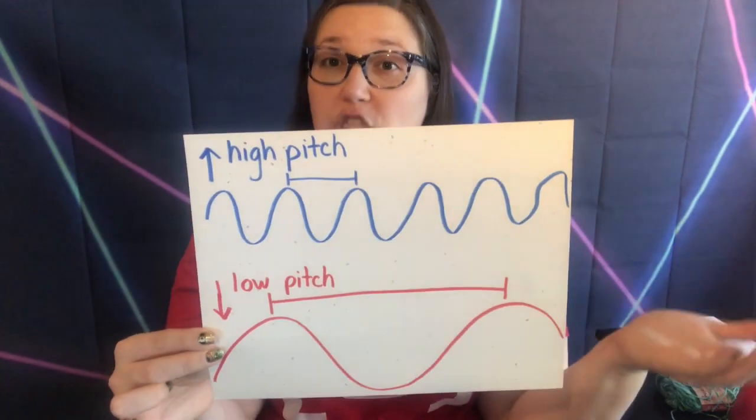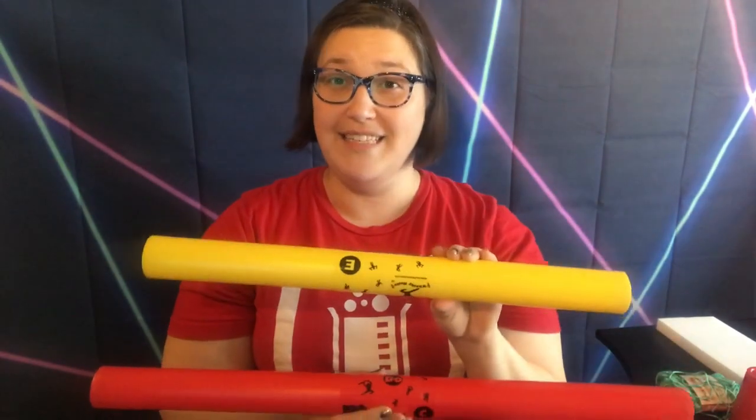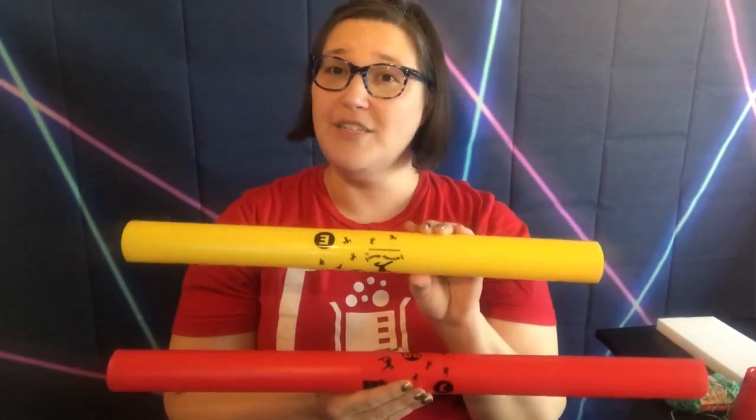We simply change the pitch by changing the wavelength. A good way to remember this is that long wavelengths equal lower sounds — L for long and L for low. Long wavelengths equal lower sounds. Short wavelengths equal higher sounds.